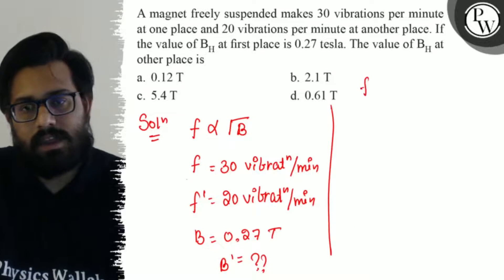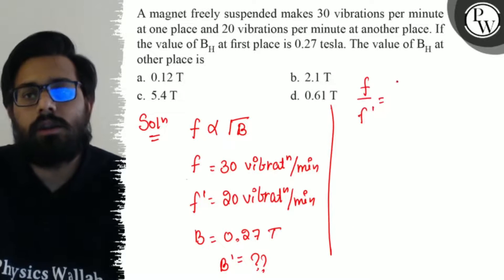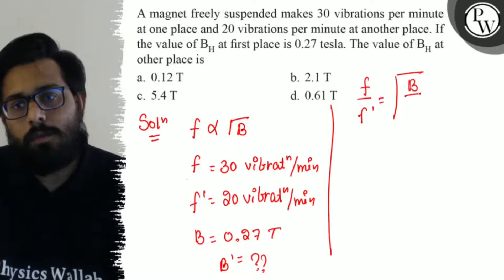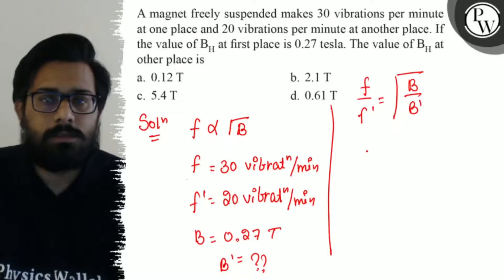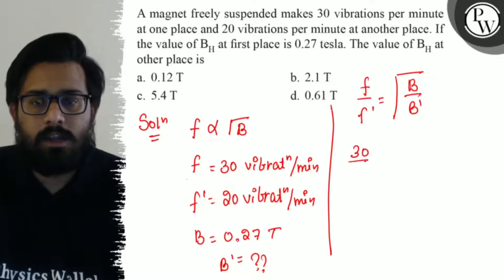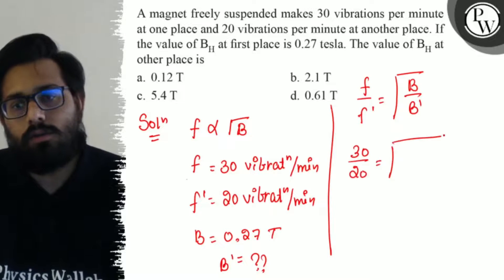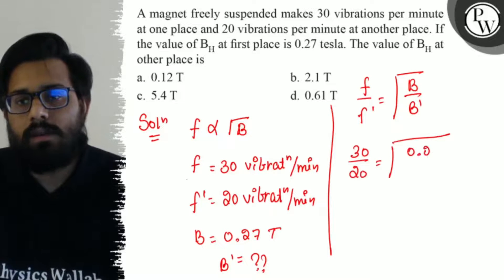So from here we can say that f upon f' is equal to the square root of B upon B'. Again, so this can be written as 30 by 20 is equal to the square root of 0.27 divided by B'.